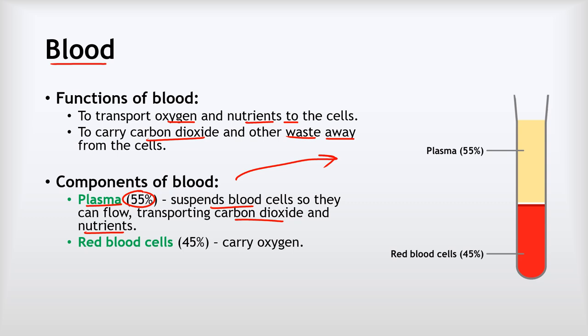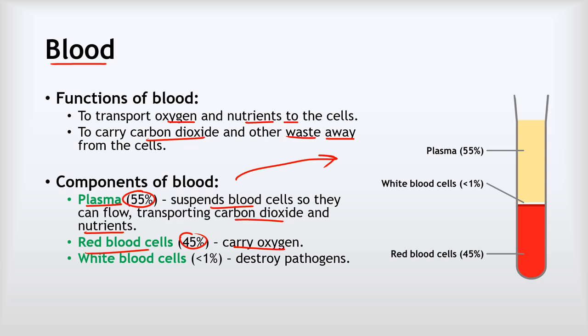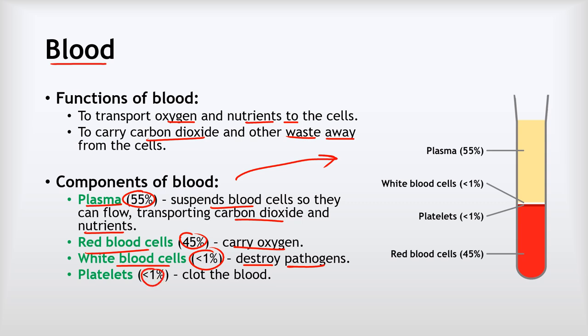Making up about 45% of the volume of blood, we have red blood cells, whose job is simply to transport oxygen around the body. A very small fraction — much less than 1% — is white blood cells, whose job is to destroy or kill pathogens, making them a major part of our immune system. Finally, also significantly less than 1%, are platelets — tiny fragments of cells whose job is to clot the blood so that when we bleed due to injury, we stop bleeding.